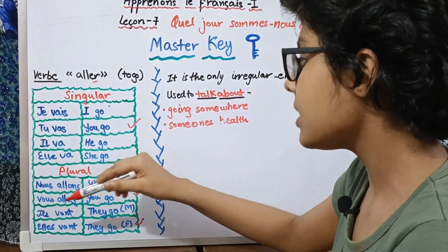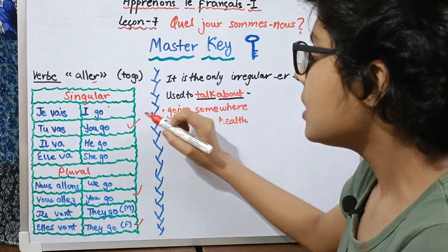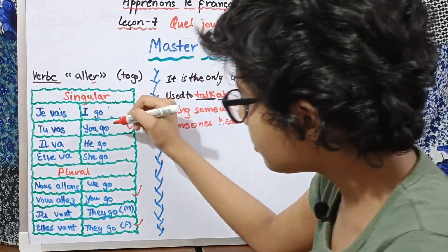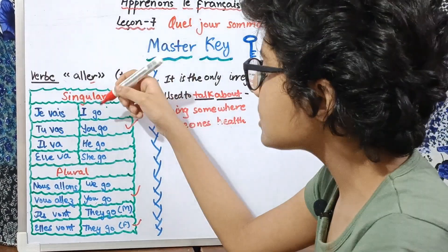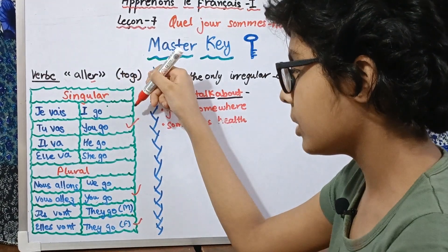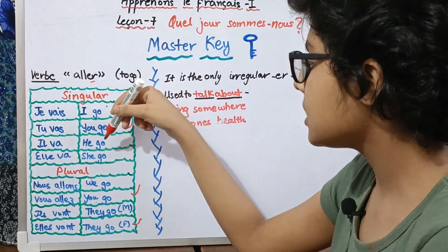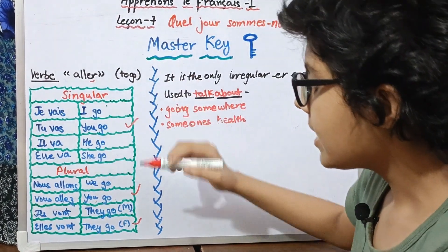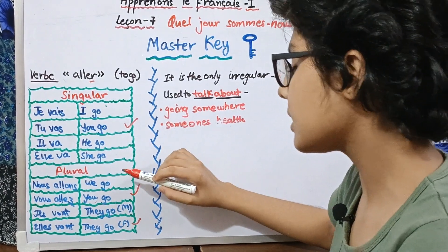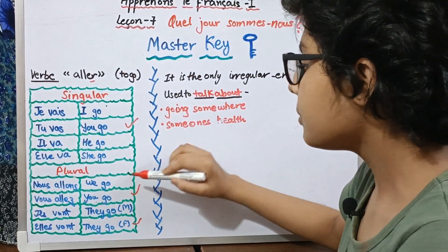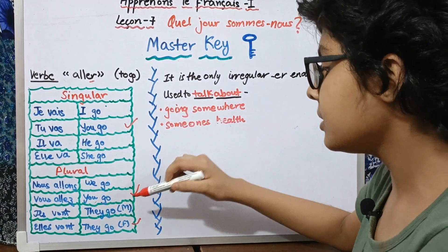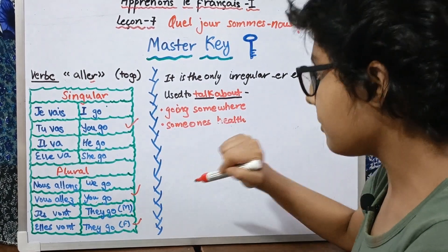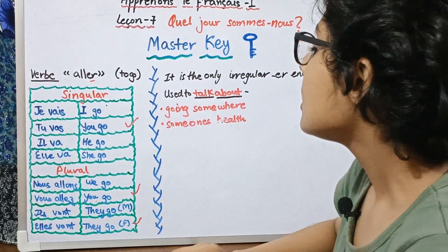So to summarize the full conjugation: je vais, tu vas, il va, elle va, nous allons, vous allez, ils vont, elles vont. These can also mean 'I am going, you are going, he is going, she is going' — and in the plural: 'we are going, you are going, they are going' — and in the feminine, 'they are going.'